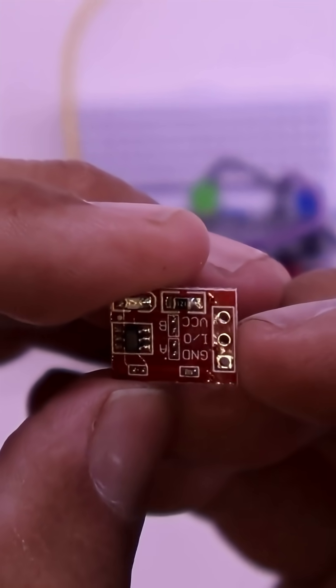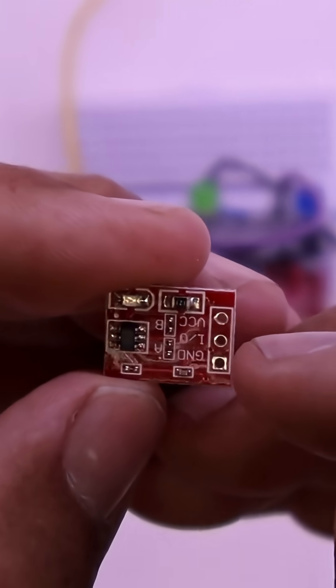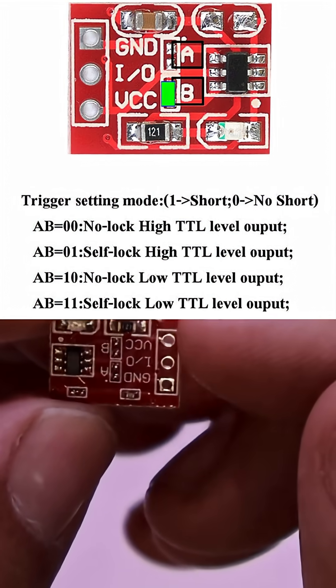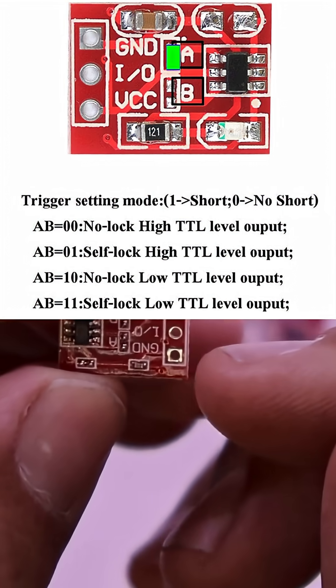There is a positive, a negative, and a signal out. There's also little tiny jumpers here, which I'm going to blow up a picture. There it is. And to show you that you can make this a latching output, or a high output, or a low output.